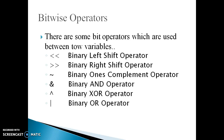The next operator is the bitwise operator. During computation, mathematical operations like addition, subtraction, and division are converted to bit level, which makes processing faster and saves power. There are different bitwise operators: bitwise AND, bitwise OR, bitwise exclusive OR, bitwise left shift, bitwise right shift, and bitwise complement. All these are the bitwise operators.